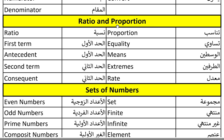Ratio and proportion. Ratio and proportion. Ratio. Ratio. First term. First term. Antecedent. Antecedent. Second term. Second term. Consequent. Consequent.